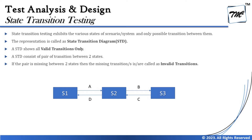An STD shows all valid transitions only and does not represent any invalid transition. However, there is a way to figure out what the invalid transitions are so you can derive full coverage — valid plus invalid test cases. The STD consists of pairs of transitions between two states. In the example diagram, we have three states S1, S2, and S3. You can go from S1 to S2, S2 to S3, and return from S3 to S2 and S2 to S1 — giving four valid transitions labeled A, B, C, D.